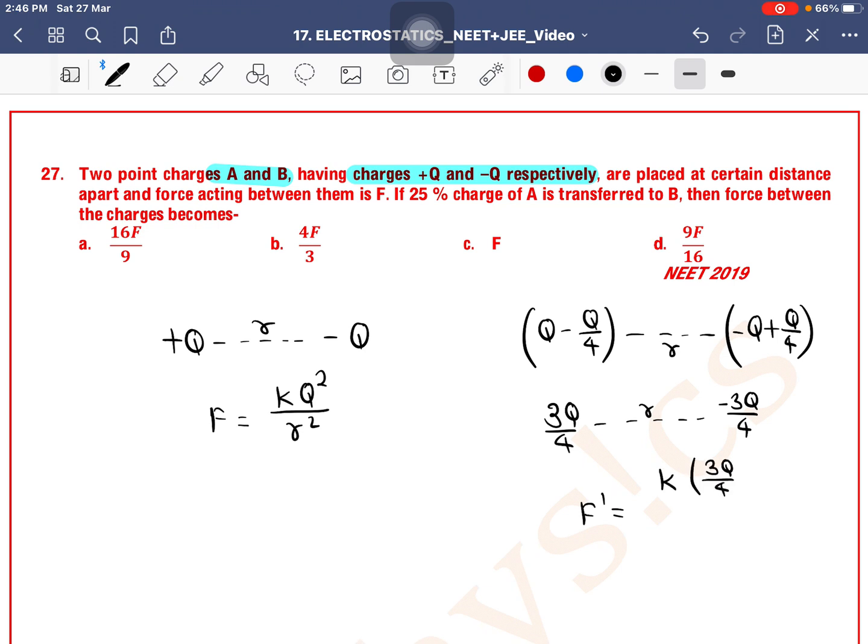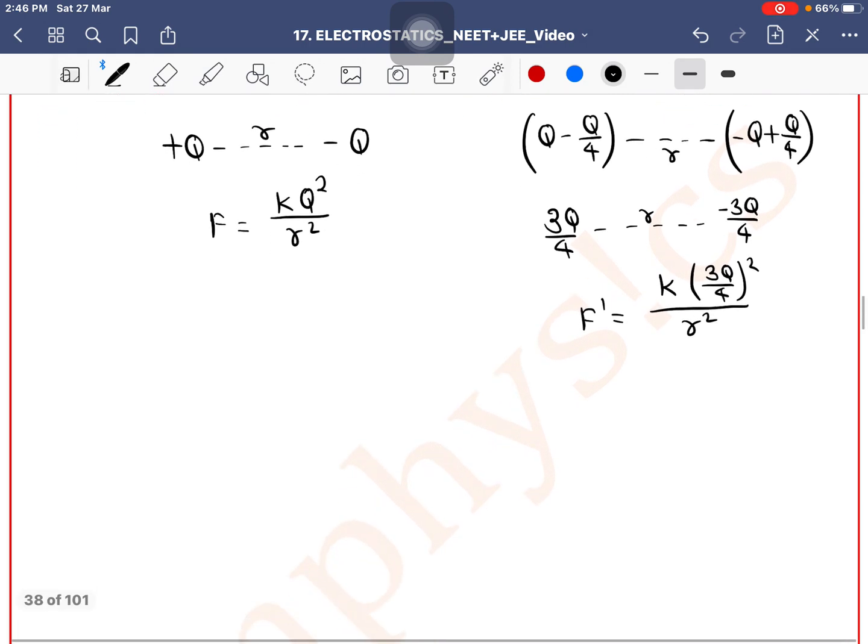F' = k × (3Q/4)² divided by r². So F' = k × 9Q²/16r².